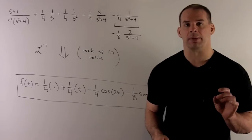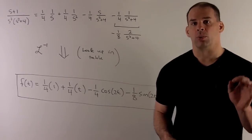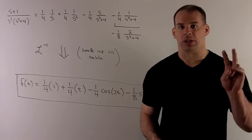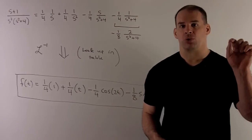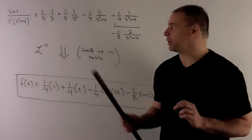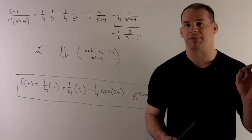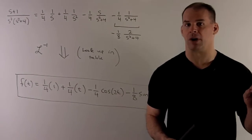Now, we can start looking things up in our table. So, we apply our inverse Laplace transform. So, that means you go to your list, you go down your right-hand column, see if you can recognize any of these. If you can, then you go to the left-hand column. That's going to be the function that you use for the original function.